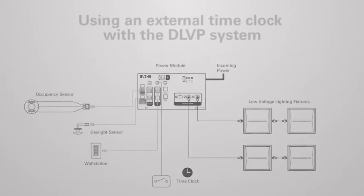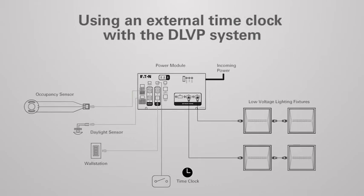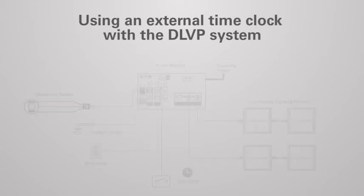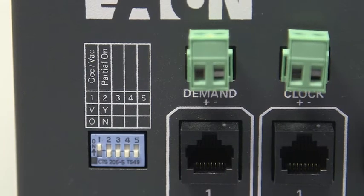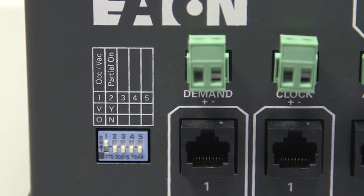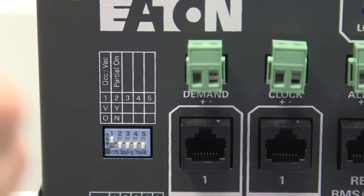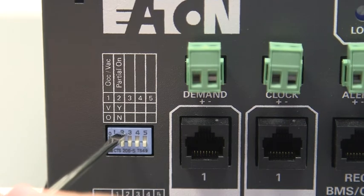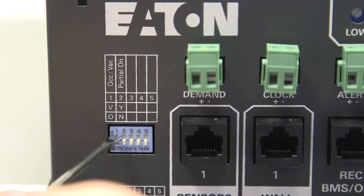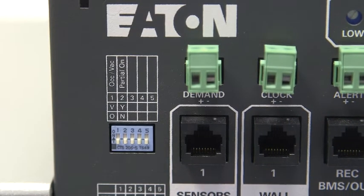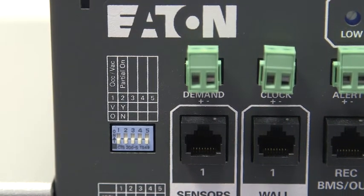The next portion of the video will discuss system behavior when occupancy sensors are being used. The power module may be configured for different occupancy sensor modes using onboard configuration switches. Some behaviors will be based on the selected mode.